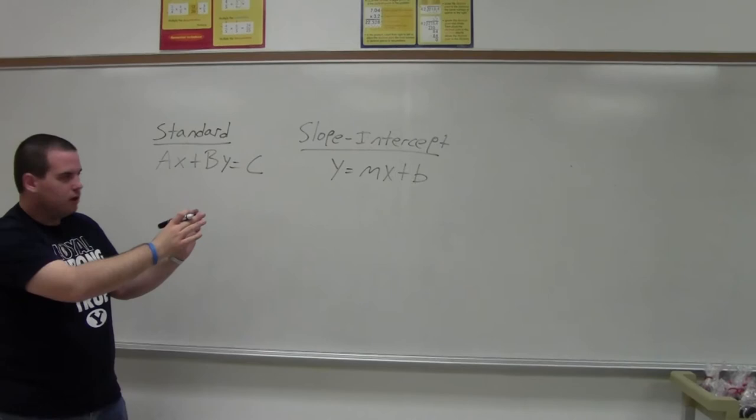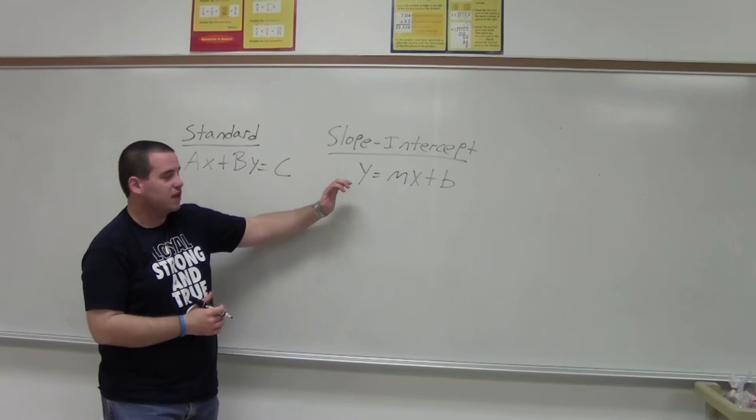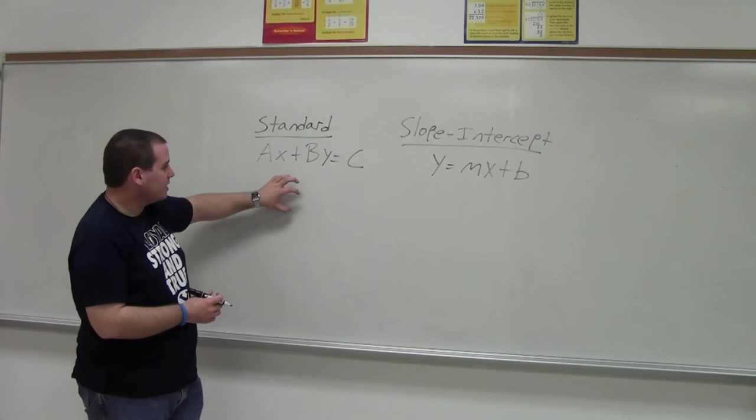The difference between the two. In slope-intercept, Y is alone. Y is all by itself, there's nothing being added to it, multiplied by it, nothing. Y is by itself.